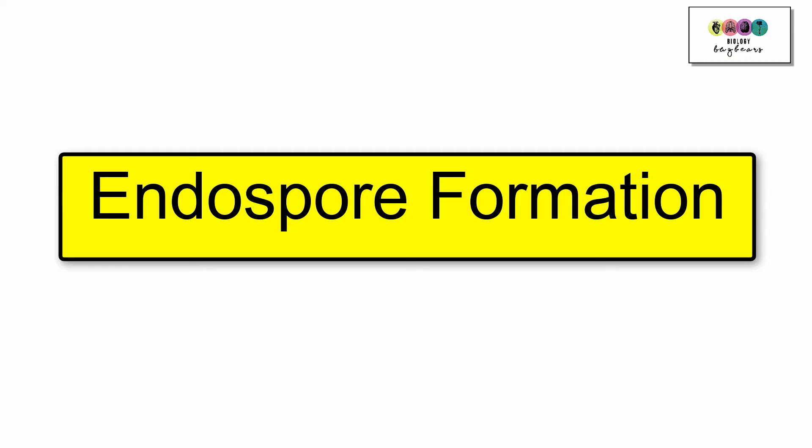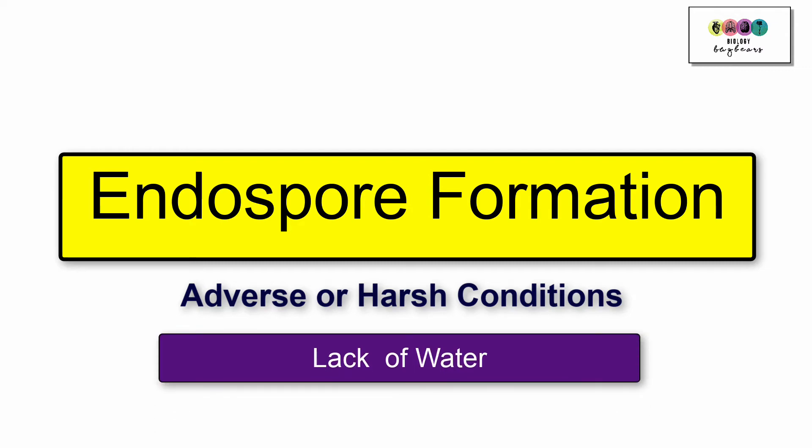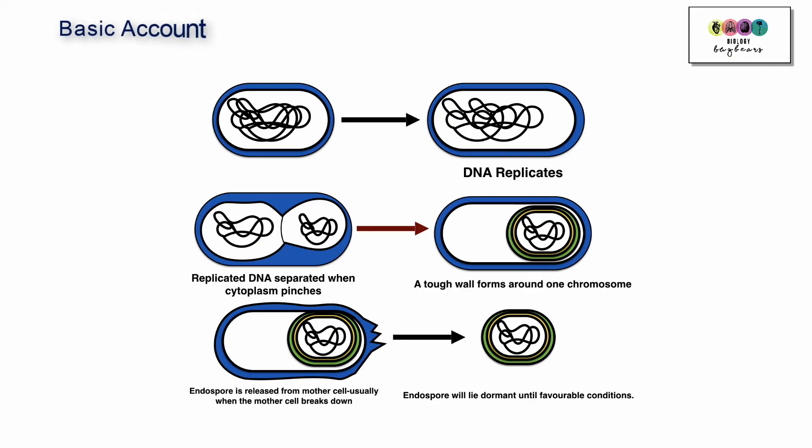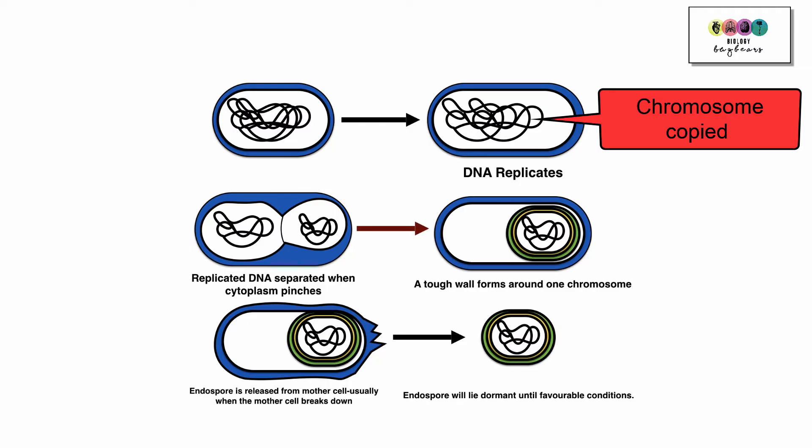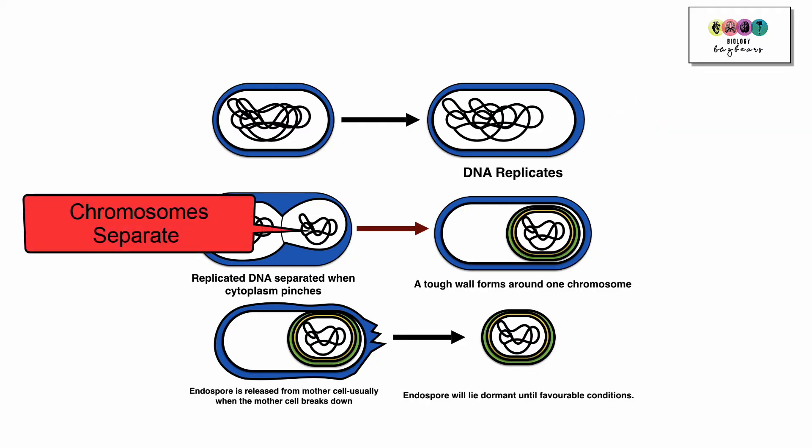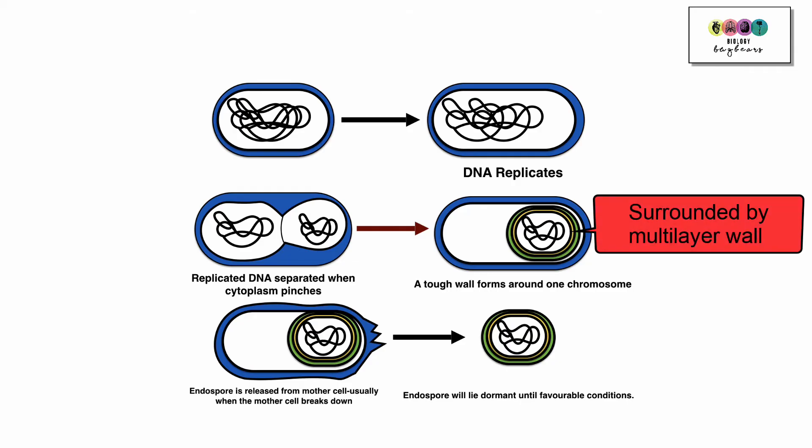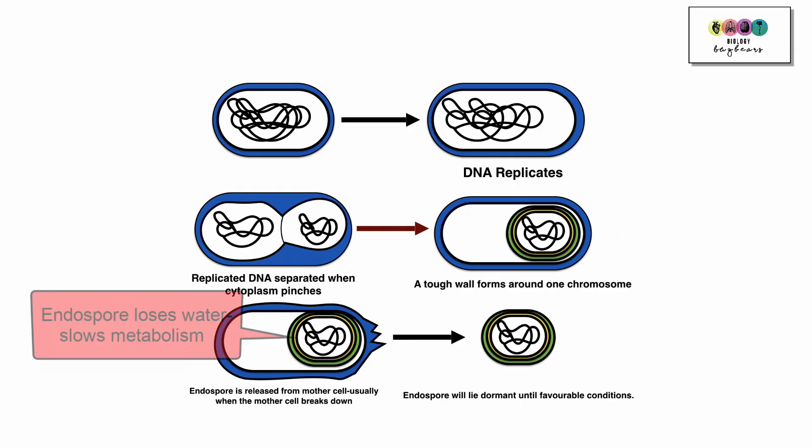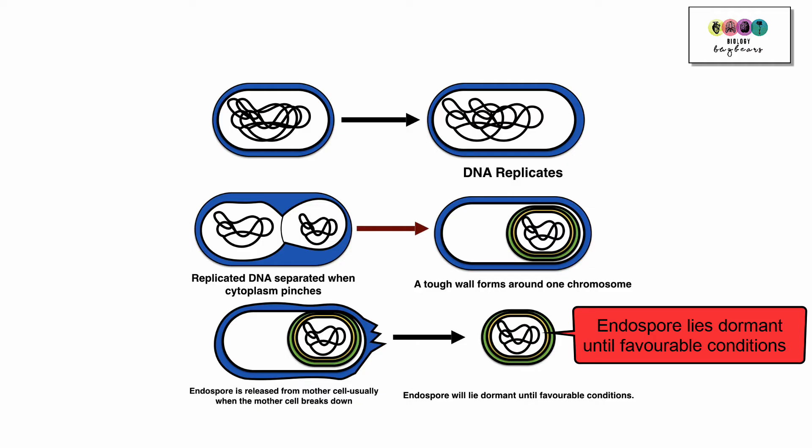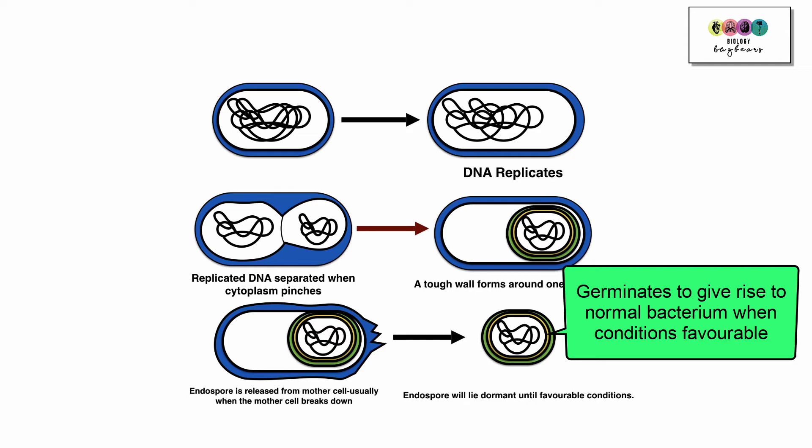Bacteria are pretty resilient and they can survive in very adverse conditions and they do this by the formation of endospores. So endospores are formed when conditions are harsh, for example there's a lack of water. So how is an endospore formed? Well first of all the bacterial chromosome, the DNA replicates, and this chromosome together with a little of the cytoplasm pinches away and it gets surrounded by this multi-layered wall structure. It loses a lot of its water and this slows down its metabolism and eventually is released from the mother cell when it bursts. Bacterial endospores are very resilient and can lay dormant for very long periods of time and when conditions are favorable they will germinate and become a viable bacterium again.